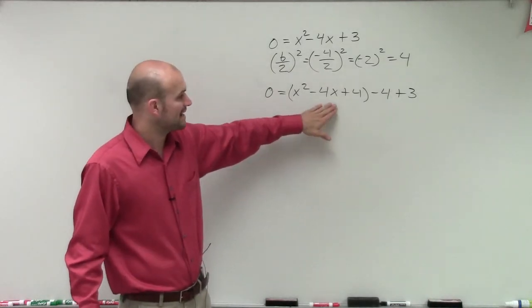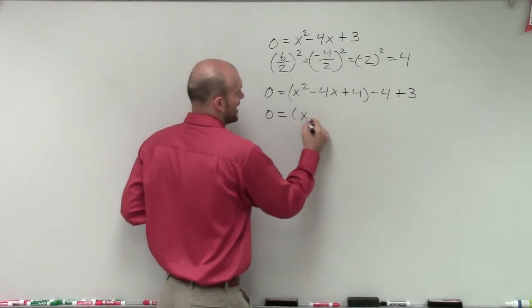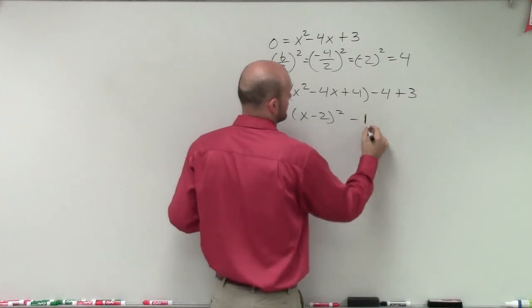which you can now factor down to a binomial squared. So this factors to x minus 2 squared, and then this equals negative 1.